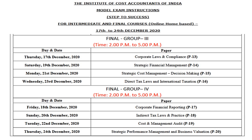Moving forward to the final course model exam for online home-based mode. The timing will be from 2 p.m. to 5 p.m. The dates are 17th, 19th, 21st and 23rd December 2020 for papers 13, 14, 15 and 16. For Group 4, the dates are 18th, 20th, 22nd and 24th for papers 17, 18, 19 and 20. Here also the concept is the same — final Group 3 and final Group 4 are on alternative days. The dates are from 17th to 24th December 2020 only.